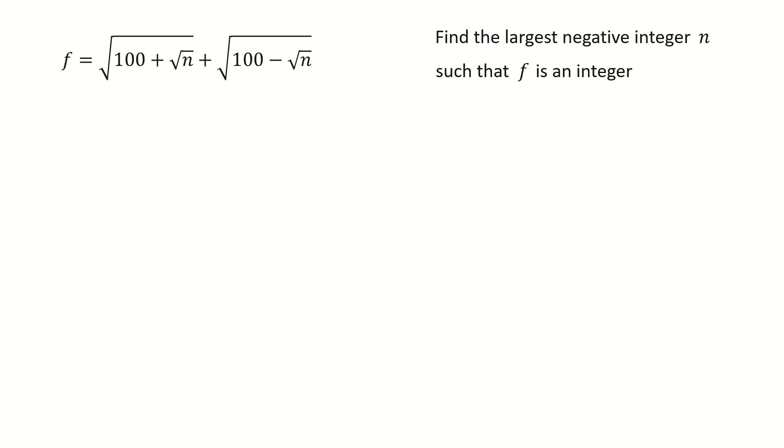Here we don't want to deal with the negative integer n, so we define n equals minus k. In this case, to find the largest negative integer n is equivalent to finding the smallest positive integer k.